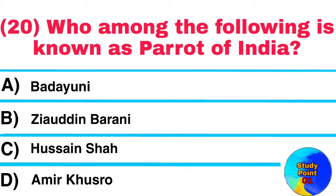Question No. 20. Who among the following is known as the Parrot of India? Answer: Ameer Khusro.